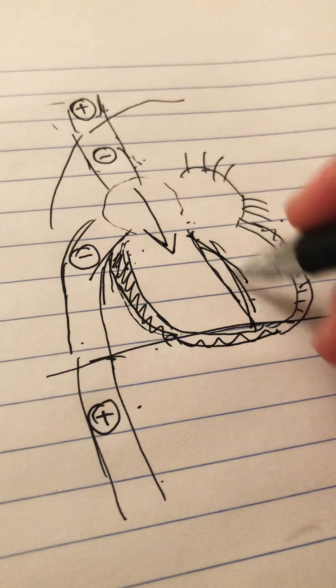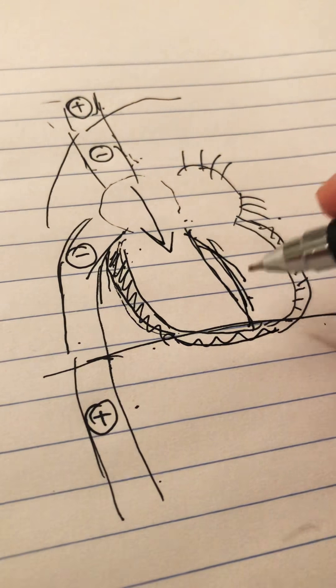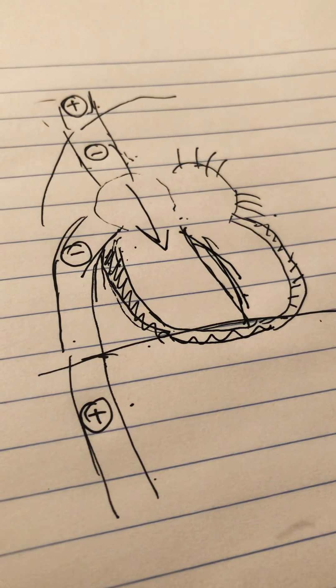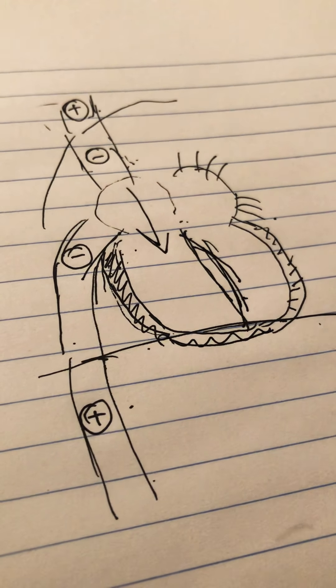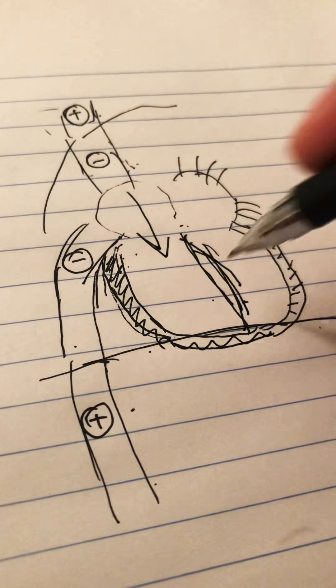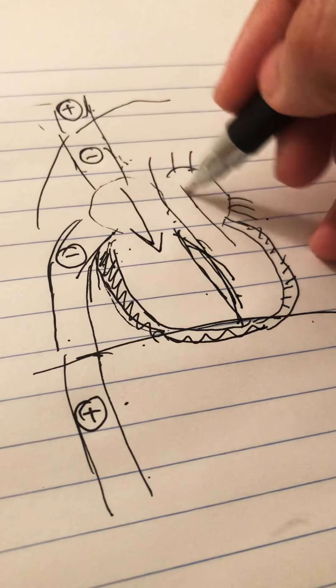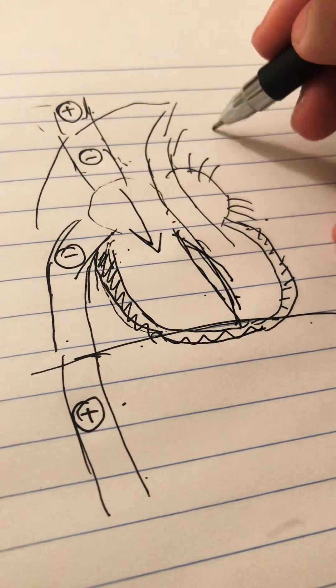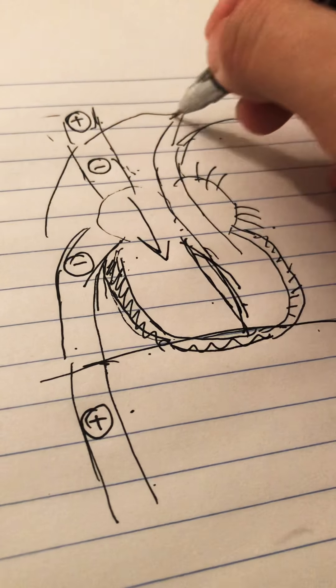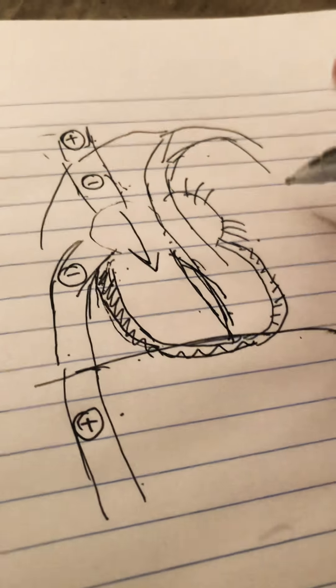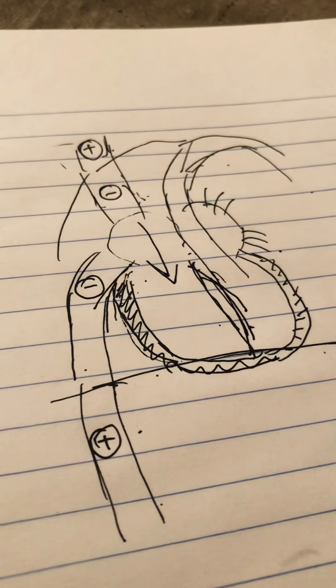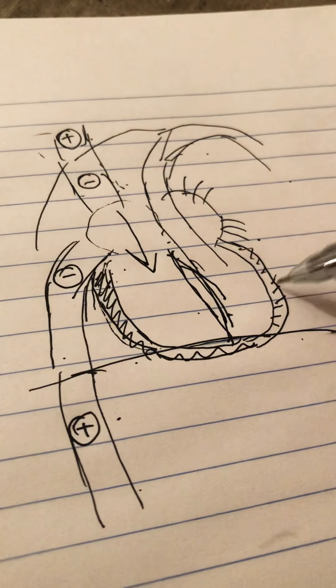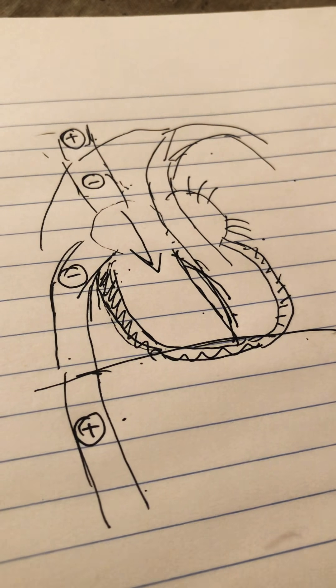So when there is an increased return to the right side, the septum gets pushed towards the left side. So it produces this ventricular interdependence, and that reflects on the blood pressure and the inspiration, the respiratory variation of the blood pressure in constrictive pericarditis or pericardial tamponade.